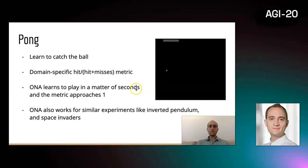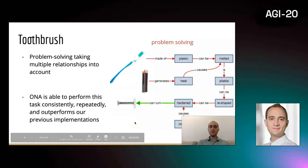We have used the system in multiple applications, like for Pong. Here the idea is simply to catch the ball, and you can define a simple metric like hit over hit and misses. In this example, the system performs very well and is able to perform similarly well in similar tasks like inverted pendulum and space invaders. We took it to the next level and tried to have examples which demand relational reasoning. The toothbrush example comes from relational frame theory. The system should unscrew a screw but doesn't have a screwdriver, so it needs to melt a toothbrush and reshape it in order to perform the task. This system can now do this consistently and repeatedly, and it outperforms our previous implementations.